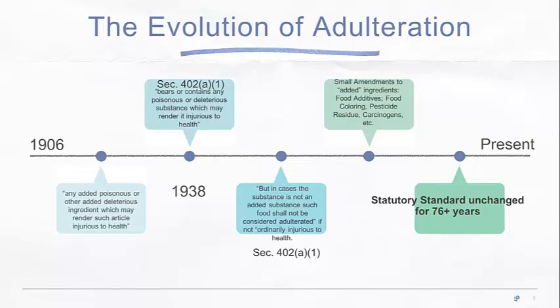The 1938 Act, which gives us the modern act we have, built on that broad definition and finally put some clarity to it. What does it mean to be 'added'? What does 'injurious to health' mean? What about naturally occurring items in food — for example, naturally occurring mercury? So we got 402A1 with the standard: if it's an added ingredient to the food, it may render it injurious to health — a higher standard that makes it easier for the FDA to enforce. But in cases where it's not added, we just have to show that it's ordinarily injurious.